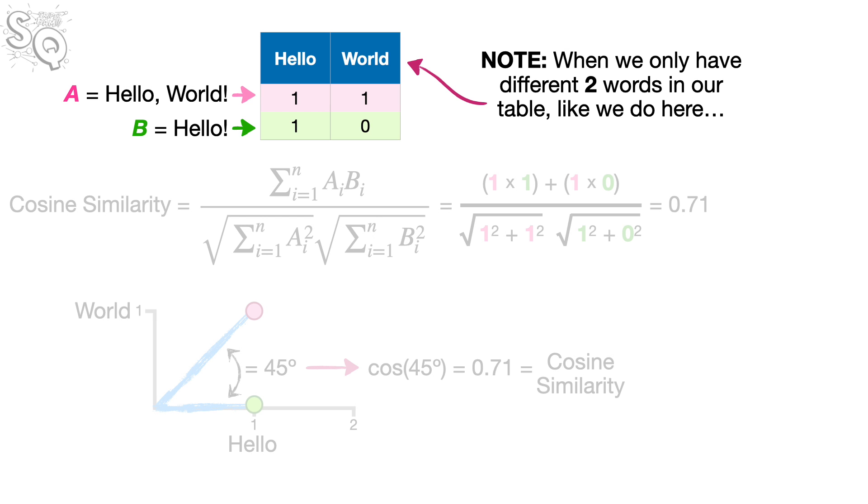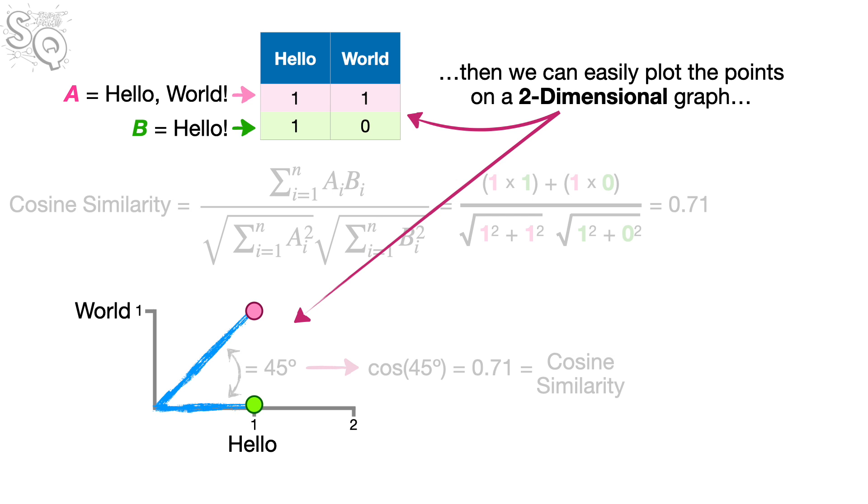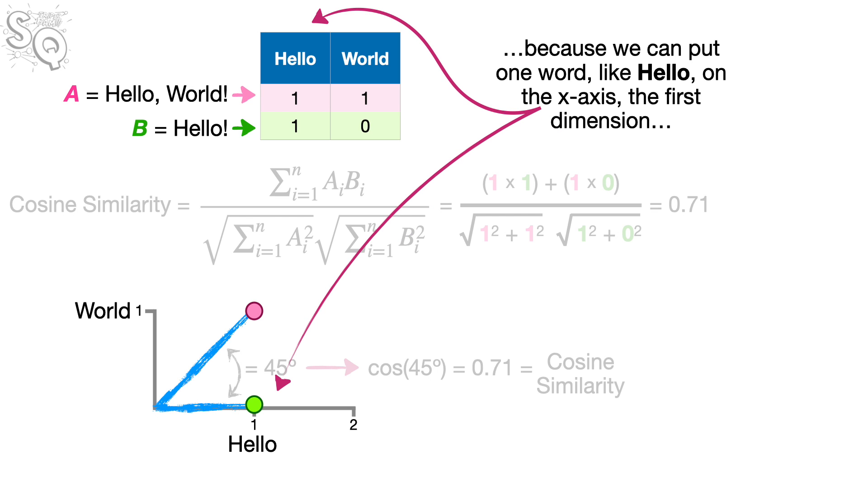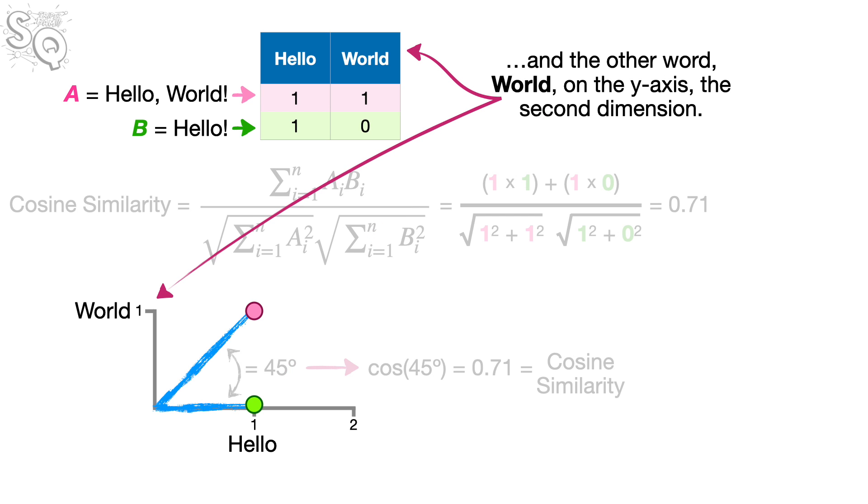Note, when we only have two different words in our table, like we do here, then we can easily plot the points on a two-dimensional graph. Because we can put one word, like hello, on the x-axis, the first dimension, and the other word, world, on the y-axis, the second dimension.